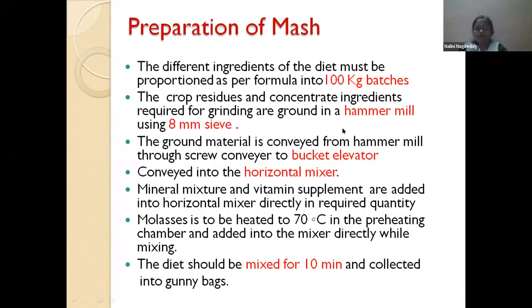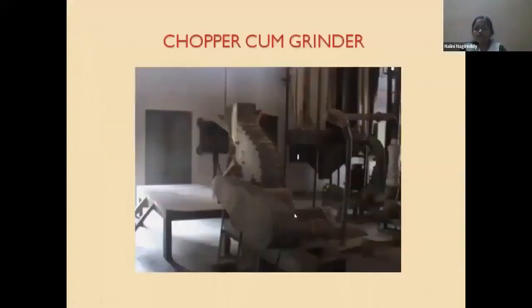A chaff cutter and pulverizer can also be used for grinding. However, a mixer is essential — without proper mixing, nutrients will not be available at the same pace in the rumen. For example, if non-protein nitrogen is available in excess with insufficient energy supply in the rumen, ammonia levels may rise and negatively impact nutrient utilization.